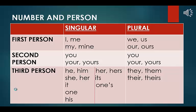In second person, the singular pronouns are you, your, and yours. The plural pronouns are also you, your, and yours. In third person, the singular pronouns are he, him, she, her, it, one, his, her, hers, its, and one's. The plural pronouns are they, them, their, and theirs.